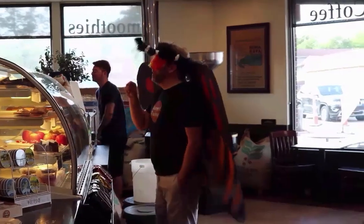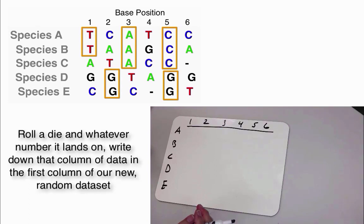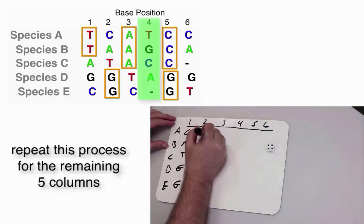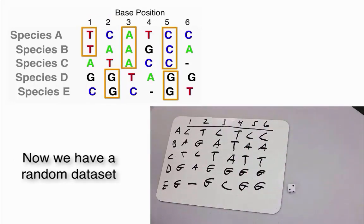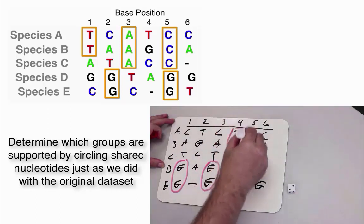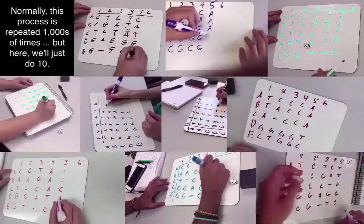And here's what you do. First, we want to generate a random data set based on our original data set. To do this, we can roll a die and whatever number it lands on, we will write down that column of data. It was a 2, so write down the data from column 2. Repeat this process for the remaining 5 columns of data. Now we have a random data set and we can look to see which groups were actually supported. Just like the original data set, we can draw circles around the nucleotides that group species together. Normally, this process would be repeated thousands and thousands of times, but here we'll just do it 10 times to finish the demonstration.